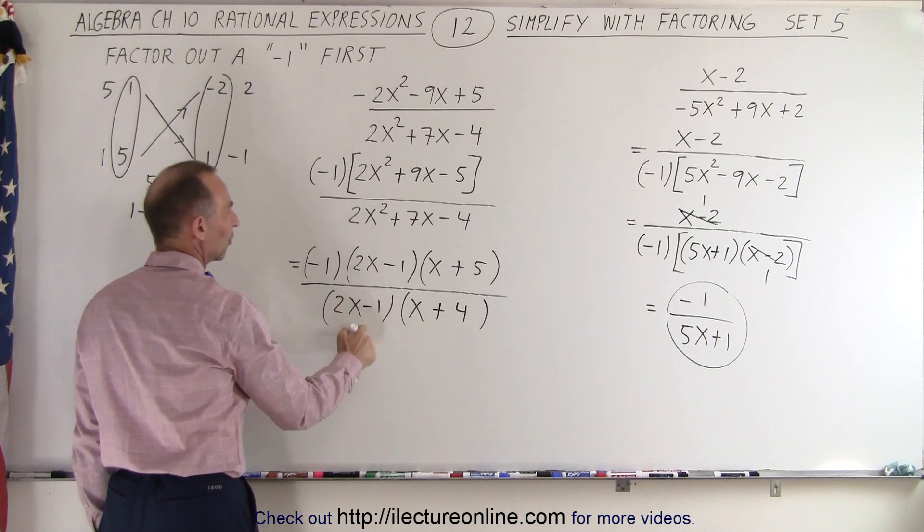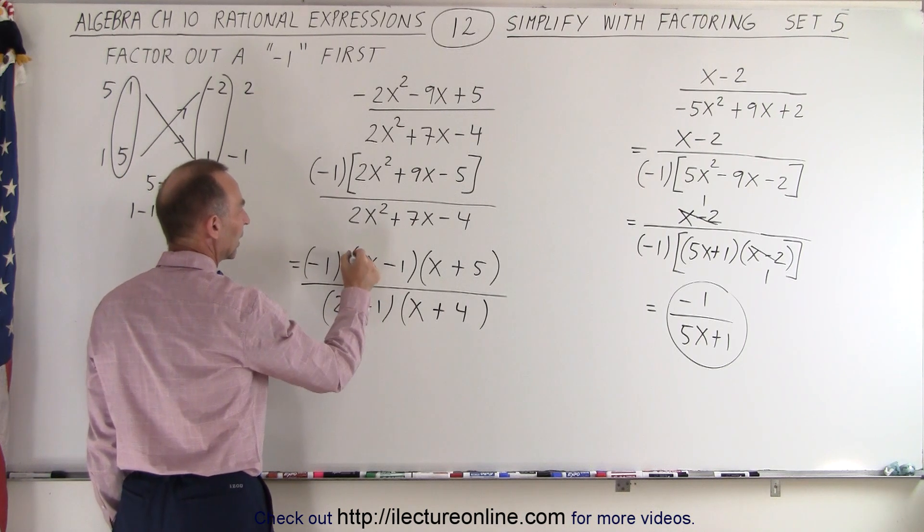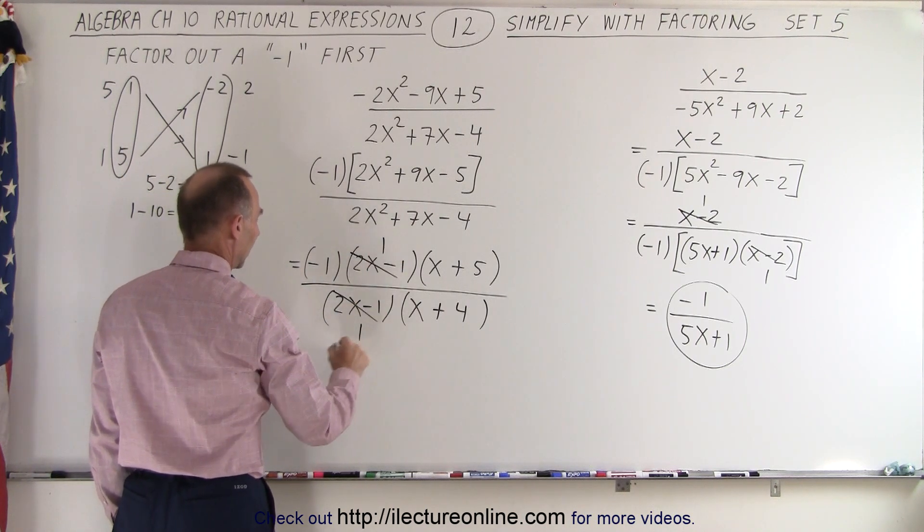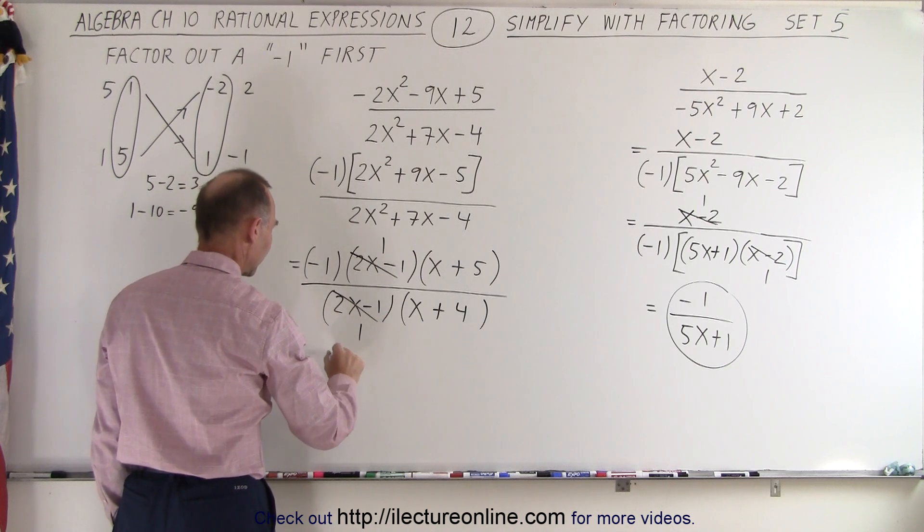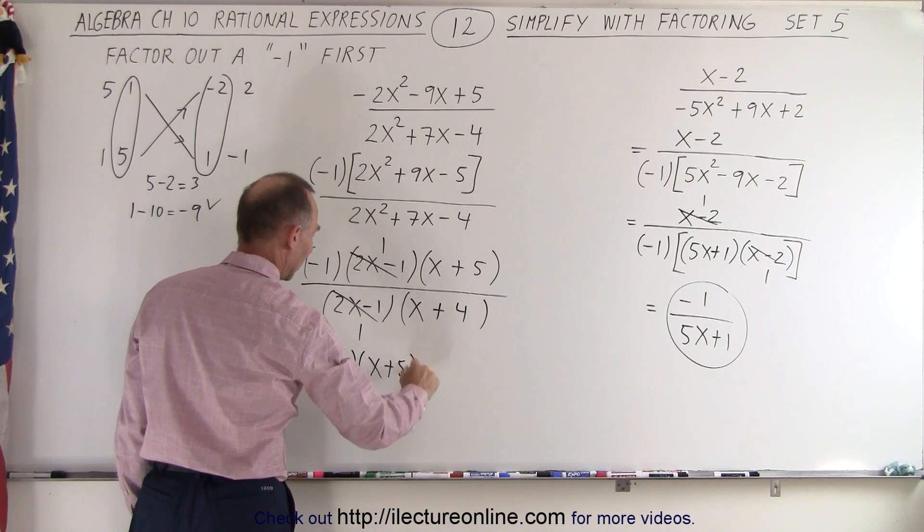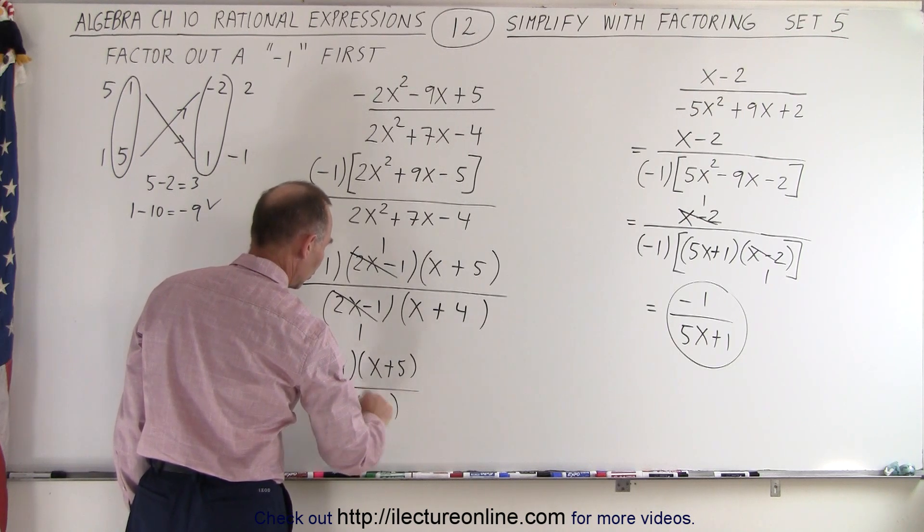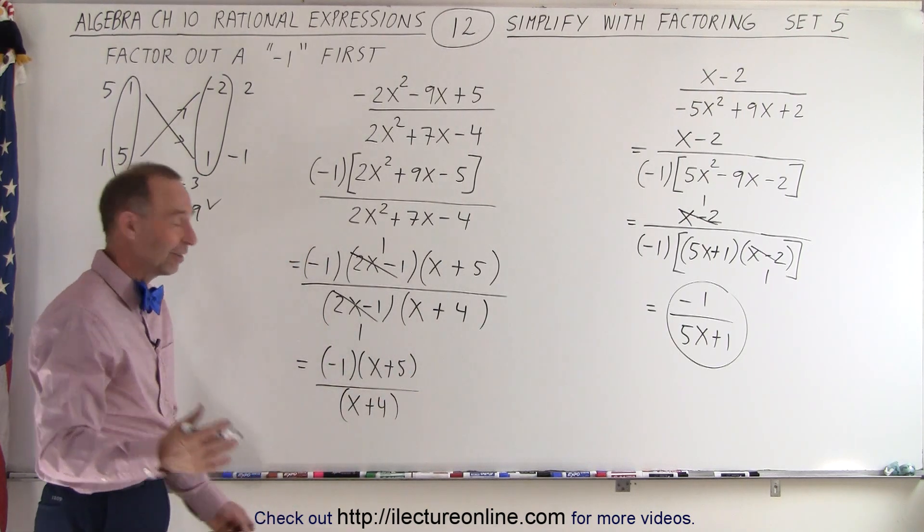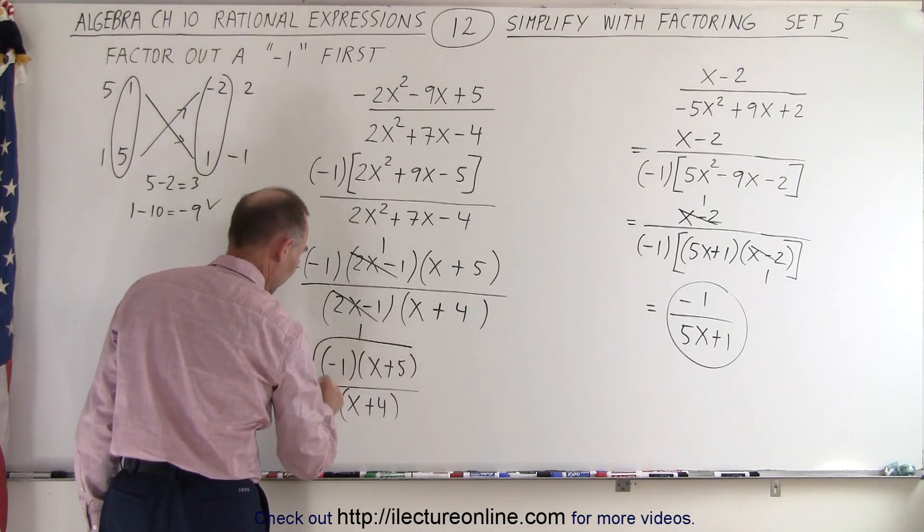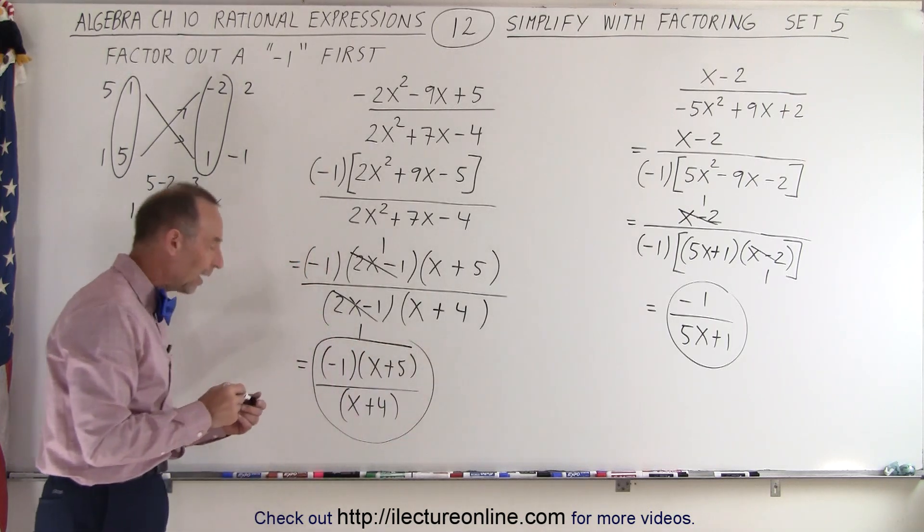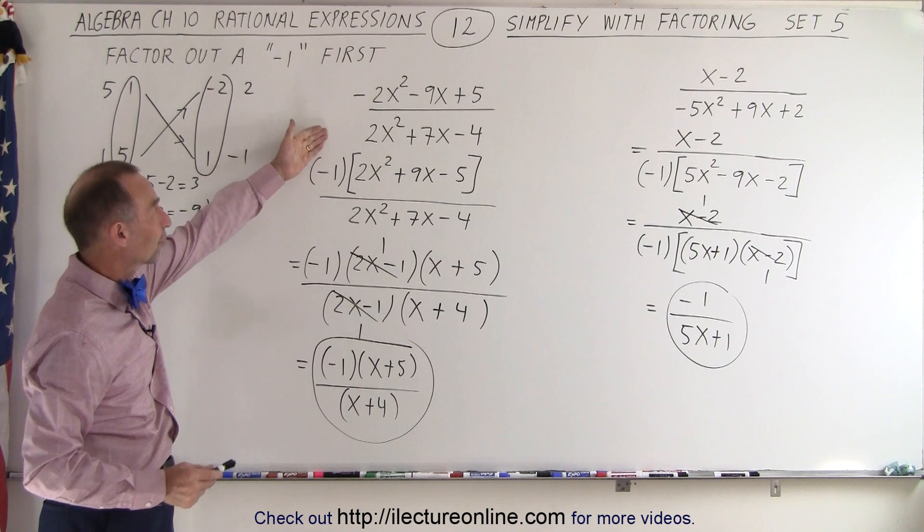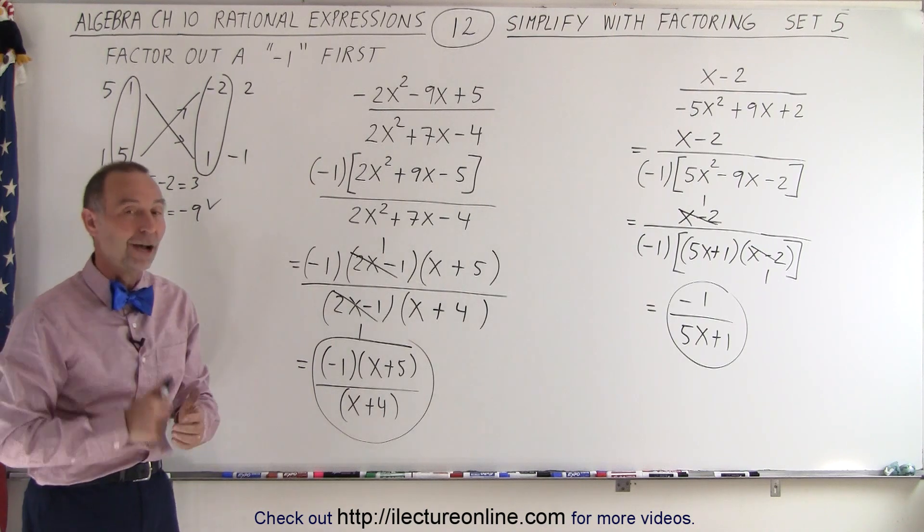Notice we have a 2x minus 1 both in the numerator and the denominator. They cancel out. And we're left with a negative 1 multiply times an x plus 5. And in the denominator, we have an x plus 4. We could multiply it through or we could just leave it at that. I prefer it in this form. And there's the simplified version of our initial expression. And that is how it's done.